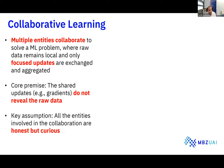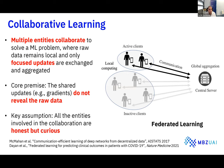The other key assumption is that all entities involved in the collaboration are honest-but-curious — they are not trying to sabotage the learning process, but at most they can try to infer private data from the updates being shared. The most well-known collaborative learning setting has multiple clients and a server. During each round, a set of active clients starts with the global model, runs local computations to get updates, shares them with the server for aggregation, and the new global model is sent back for the next round.